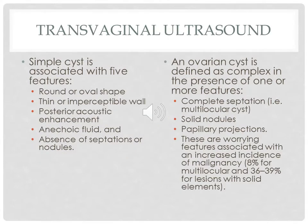Comparing ultrasound criteria: a simple cyst would be rounded or oval, thin-walled, with posterior acoustic shadowing, anechoic fluid, and absence of septation. A complex cyst suspicious for malignancy would have complete septations, solid nodules, and papillary projections. The presence of any worrying features carries increased risk of malignancy — approximately 8% for multilocular cysts and 36 to 39% for lesions with solid elements.